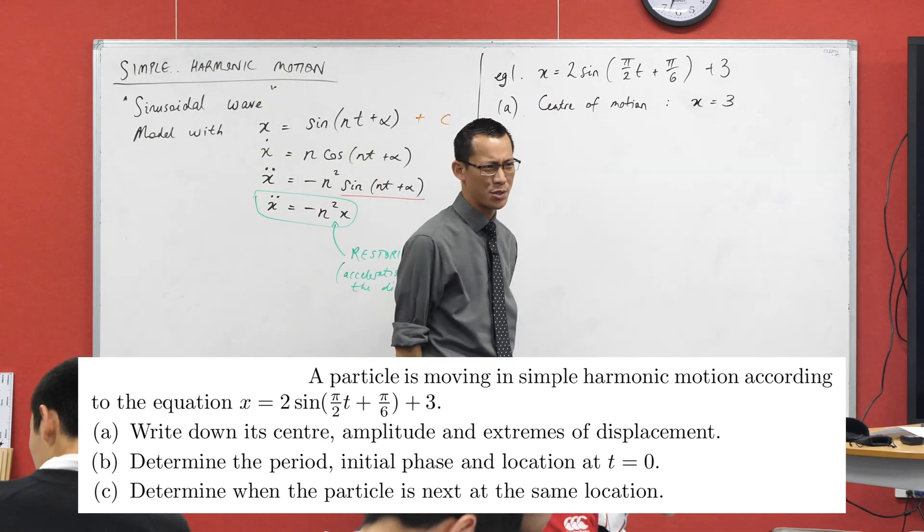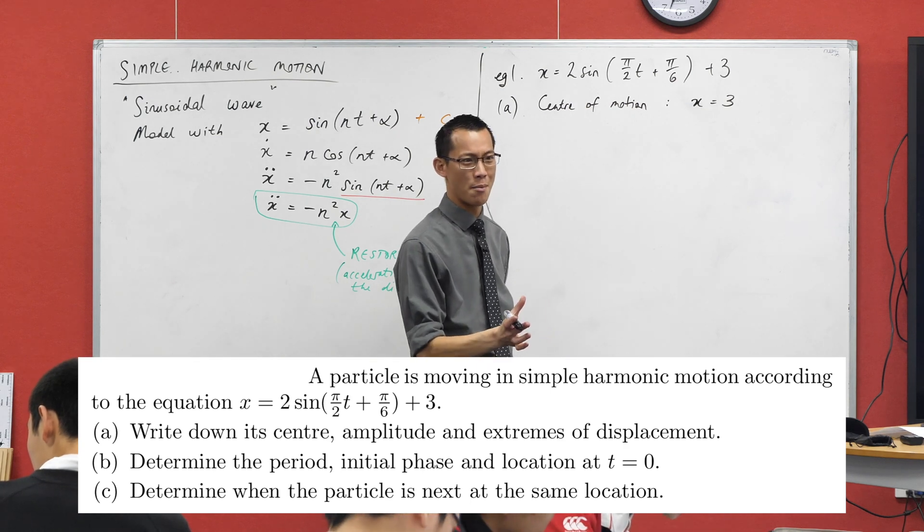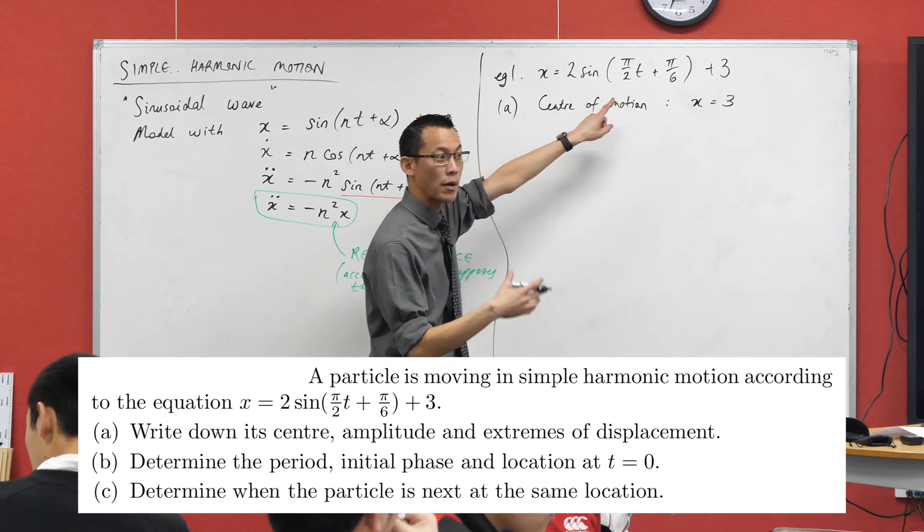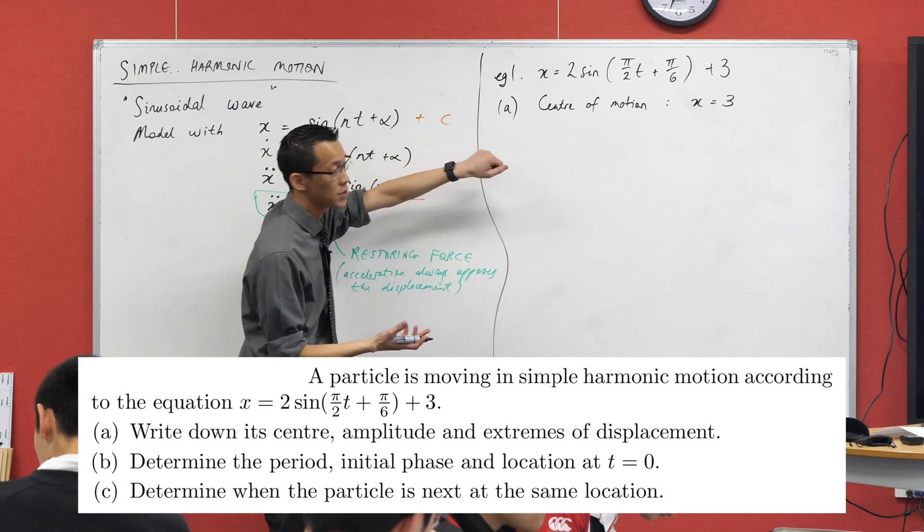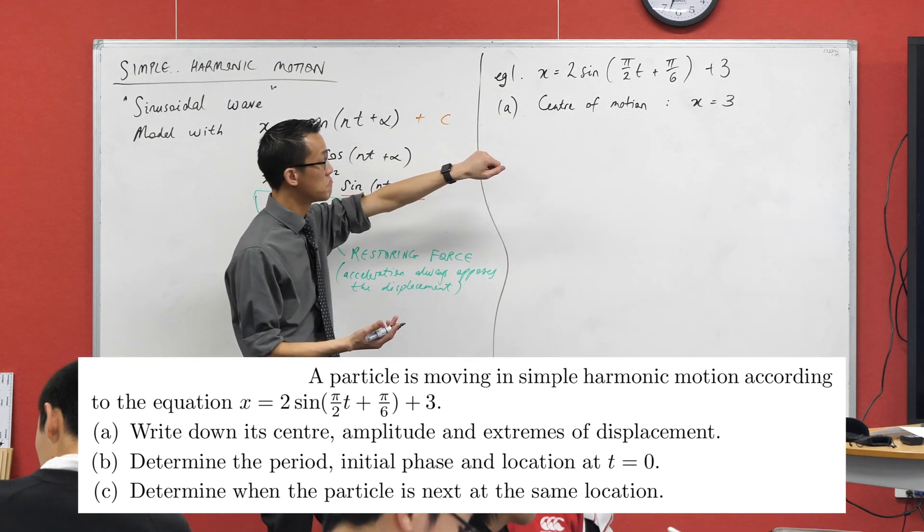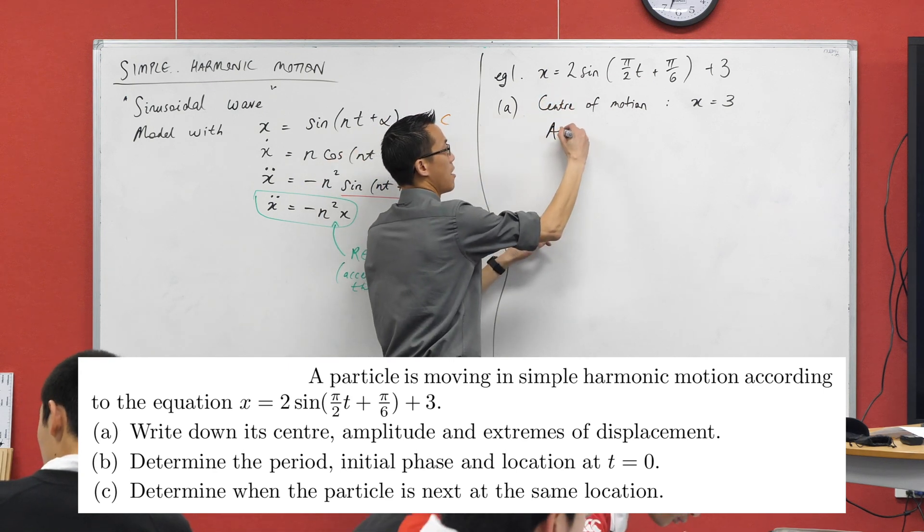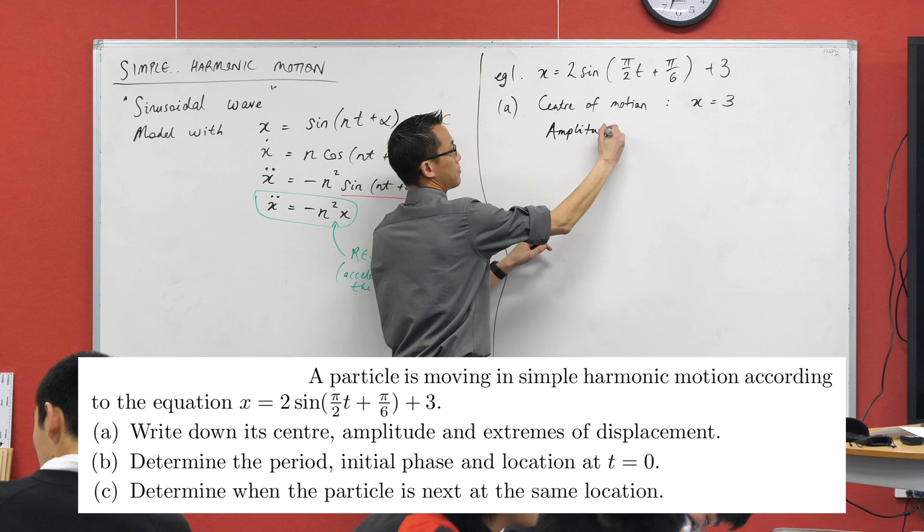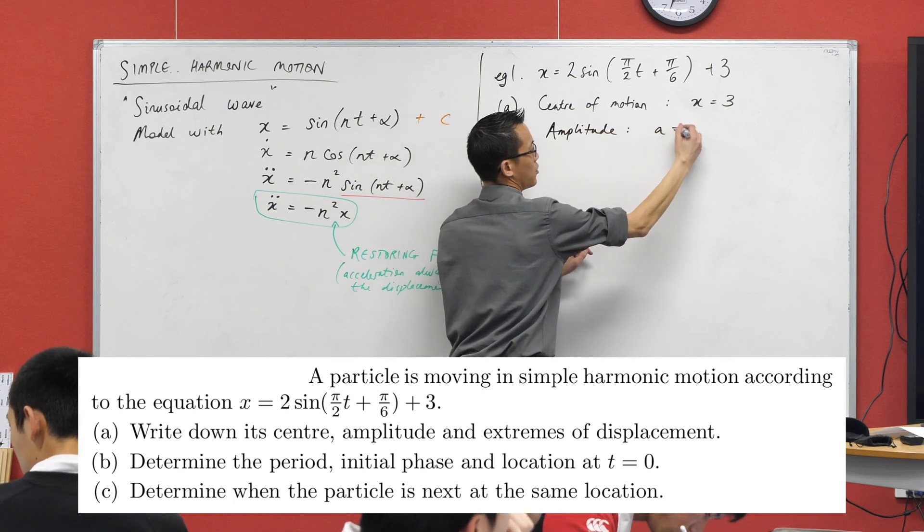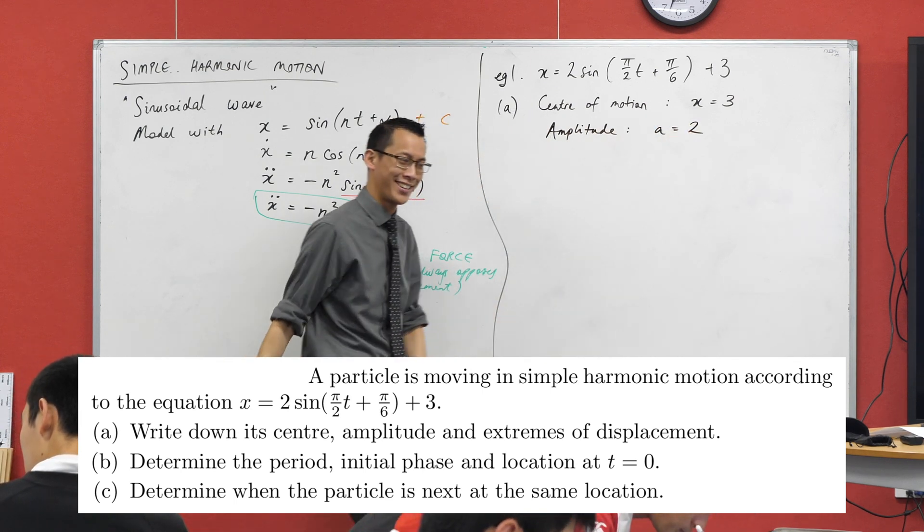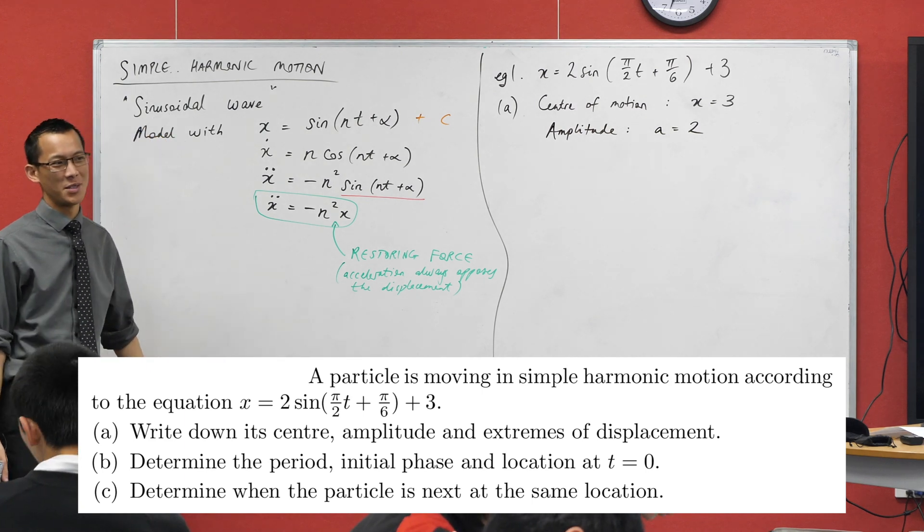Next thing, amplitude. You don't even need to know that this is simple harmonic motion to look at this function and tell me which number, which value is going to give you the amplitude here. It's two, right? This is the part that tells you how far up and down you can go. So I'm going to say my amplitude, and customarily we use a because we're boring about that, a is equal to two.